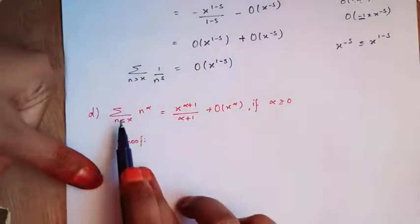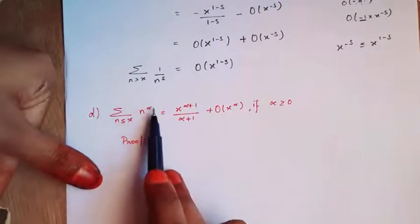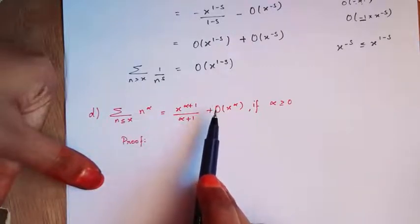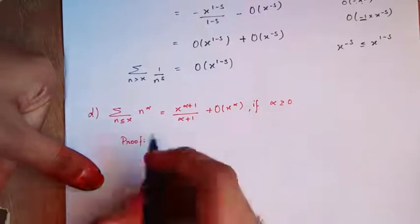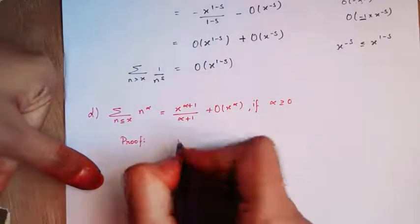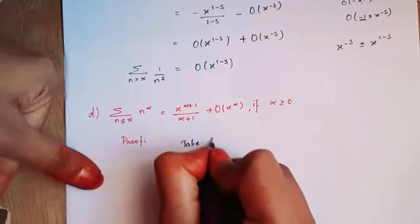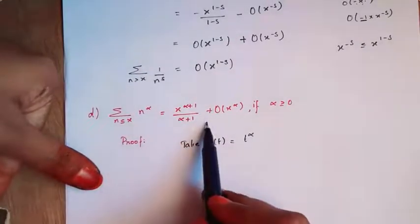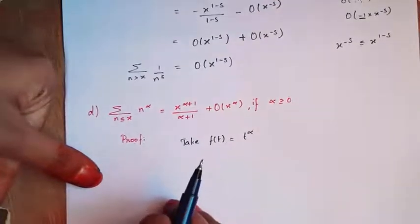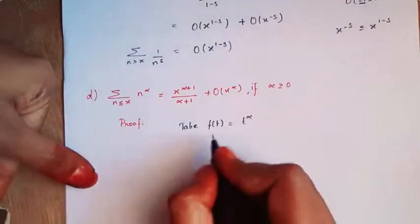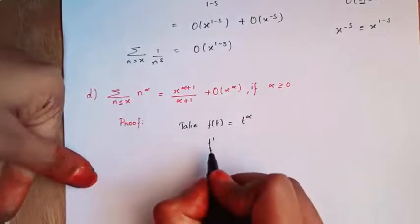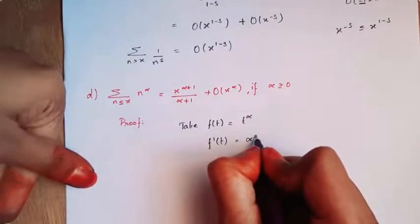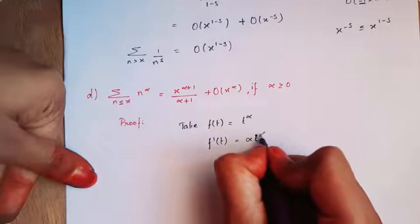Next we will see the last part. The sum over n ≤ x of n^α equals x^(α+1)/(α+1) plus big O(x^α), for α greater than or equal to 0. I am going to take the function f(t) = t^α. We are going to solve this part using the Euler summation formula, which we have already used in Parts A and B, so I will use it directly. The first derivative is f'(t) = α·t^(α-1).